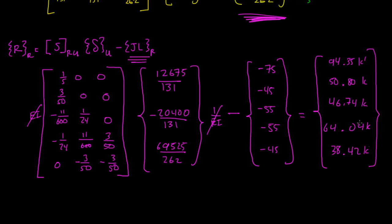And how do I know this is some of them are kip foot and some of them are kips? Well, they refer to the degrees of freedoms, numbers 4, 5, 6, 7, 8.